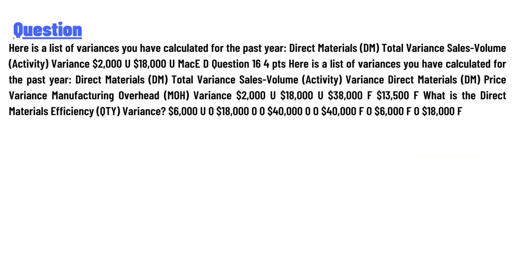Here is a list of variances you have calculated for the past year: Direct Material (DM) total variance, Sales Volume Activity variance $2,000 U, $18,000 U. Direct Material (DM) price variance, Manufacturing Overhead (MH) variance: $2,000 U, $18,000 U, $38,000, $13,500 F. What is the Direct Material efficiency quantity variance? The options are: $60,000, $18,000, $40,000, $40,000, $6,000, $18,000 F.